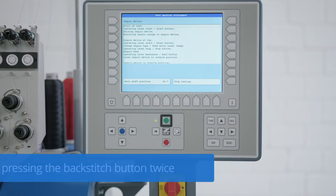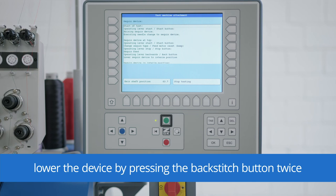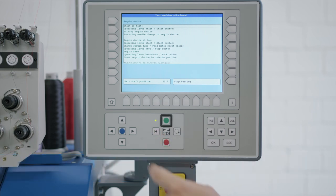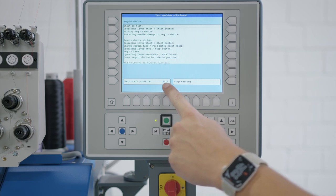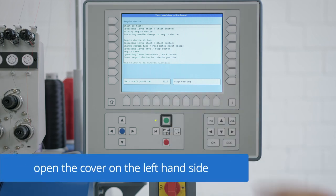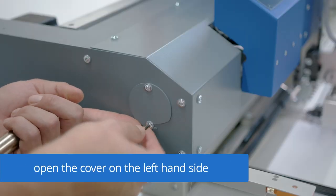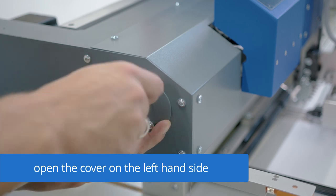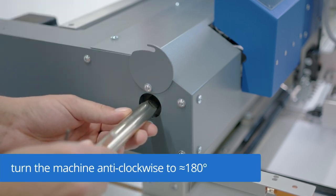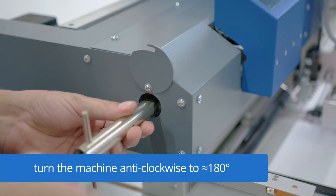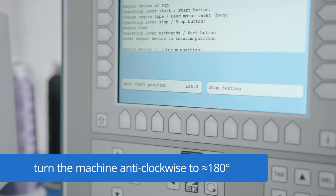To align the needle in the hole of the bead, we need to lower the device by pressing the backstitch button twice. Now we need to turn the machine to 180 degrees. To turn the machine, we need to open the cover on the left hand side and work with the square key. We can turn the machine anti-clockwise to 180 degrees.